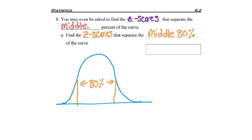We're going to need to find two z-scores: a negative z-score because it's on the left side of the curve, and a positive z-score that's on the right side of 0 in the center.